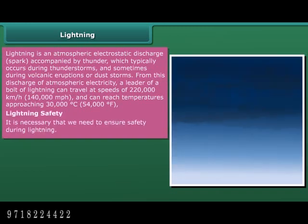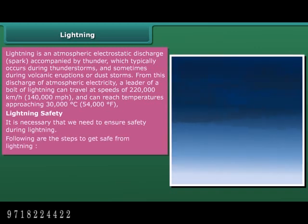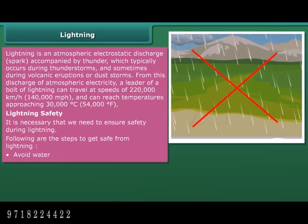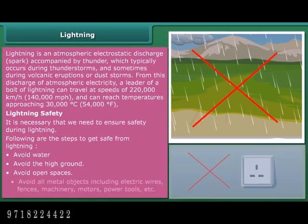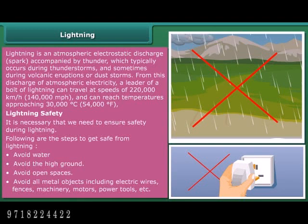It is necessary to ensure safety during lightning. Follow these steps: avoid water, avoid high ground, avoid open spaces, and avoid all metal objects including electric wires, fences, machinery, motors, and power tools.